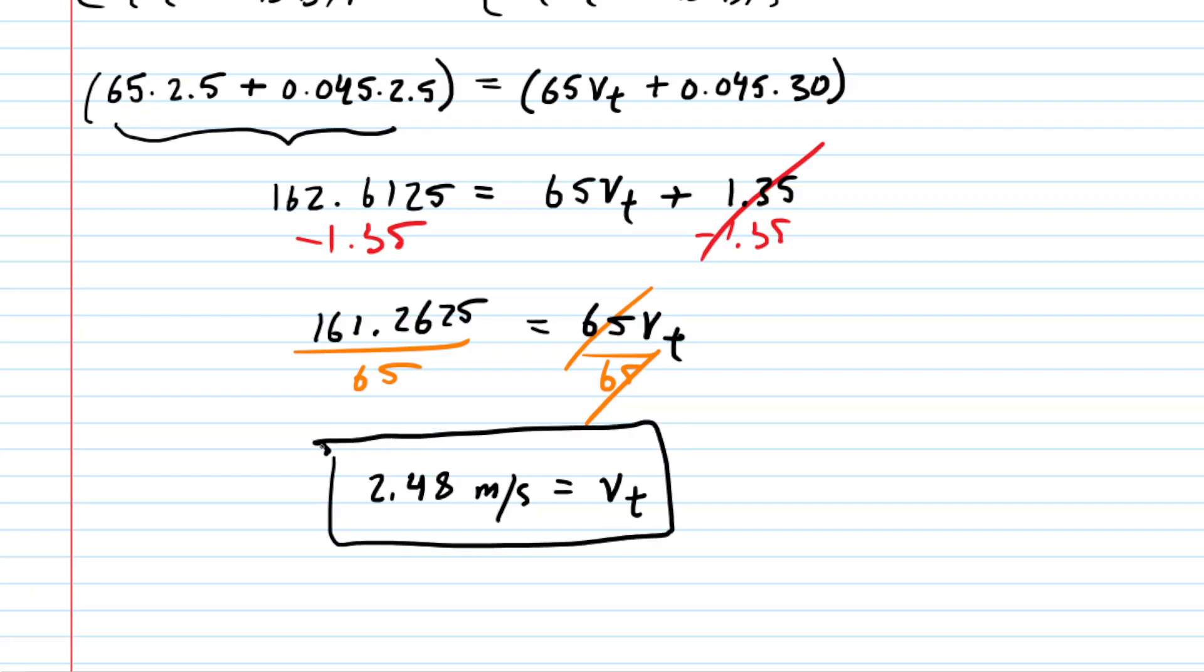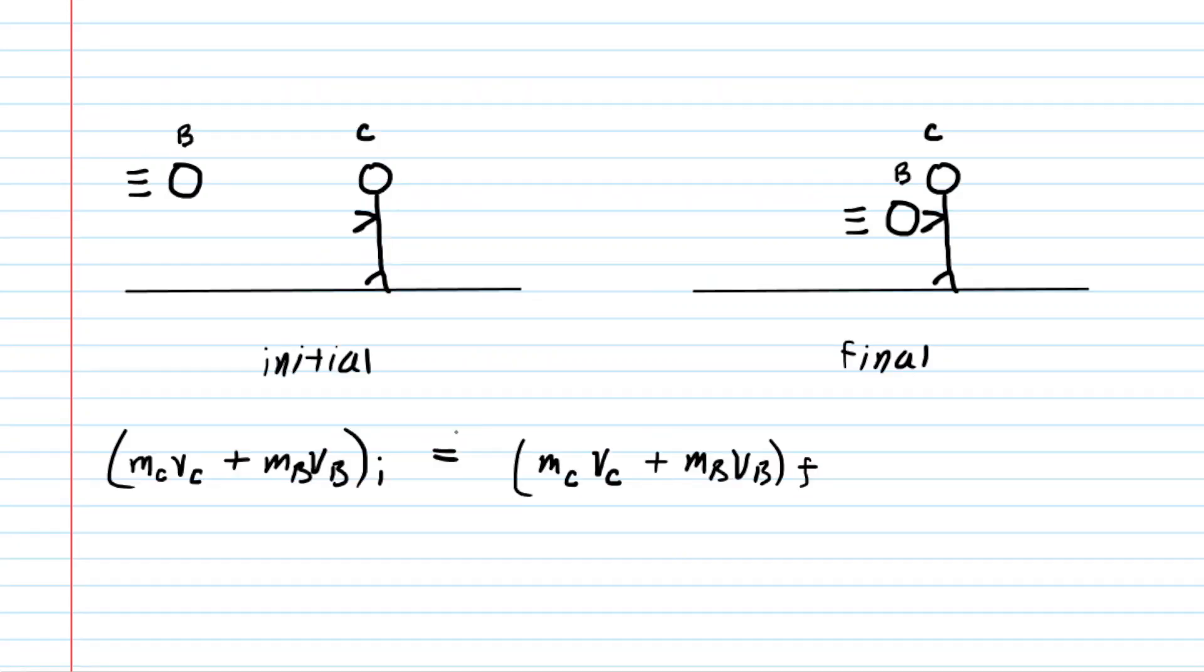Now let's take a look at the scenario from the perspective of the person catching the ball. It's basically the same kind of setup. We're still going to set the initial momenta of the ball and the catcher equal to the final momenta of the ball and the catcher.